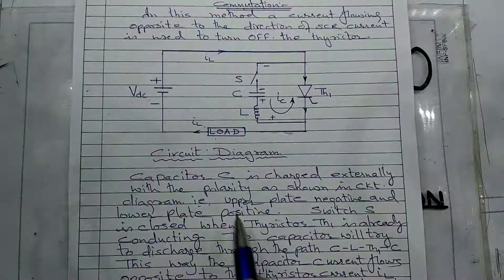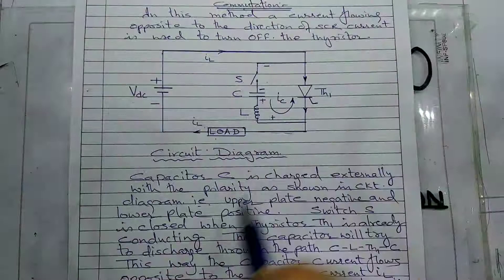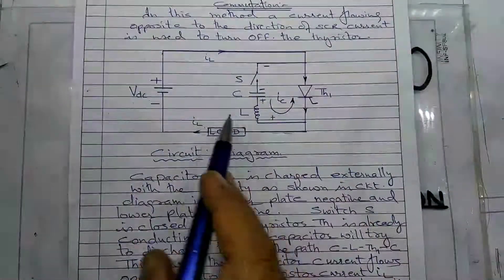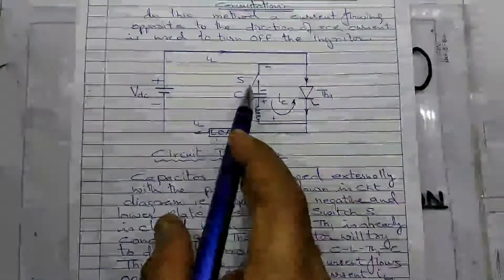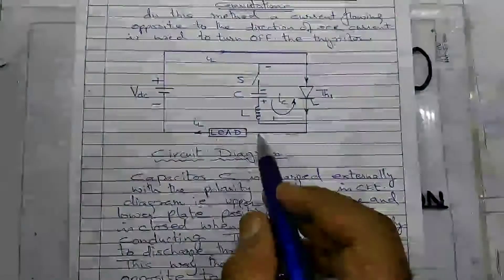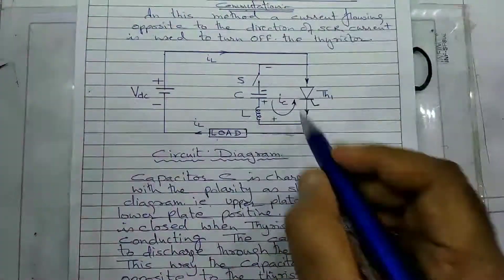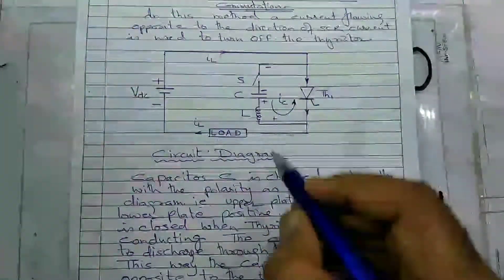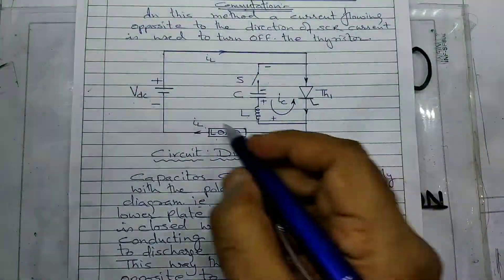The capacitor will try to discharge through the path C, L, TH, and C. This way, the current IC will flow just opposite to the flow of current through the thyristor or the load current.